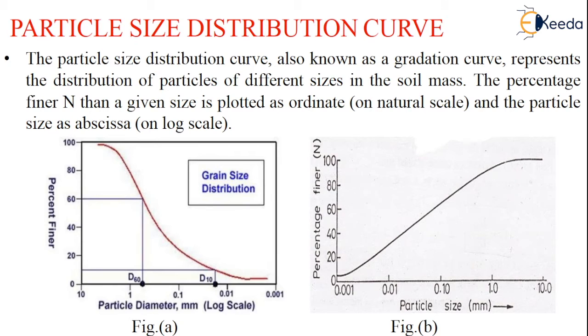We know that the particle size distribution curve is also known as gradation curve. This is very important as it represents the distribution of particles of different sizes in the soil mass. The percentage finer N than a given size is plotted as ordinate on the natural scale and the particle size as abscissa on log scale as shown in the figure.